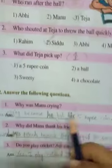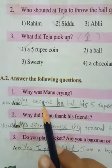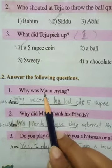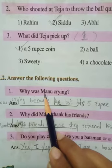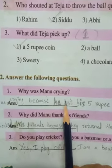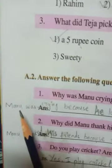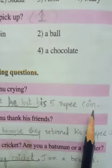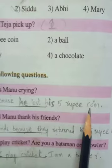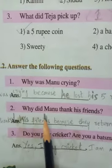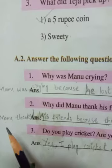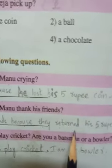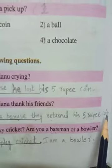Answer the following questions. Why was Manu crying? Manu is a boy who lost his five rupee coin, so he was crying because he lost his five rupee coin. Why did Manu thank his friends? Manu thanked his friends because they returned his five rupee coin.